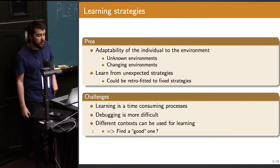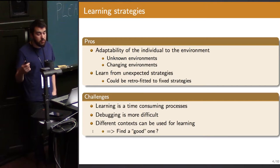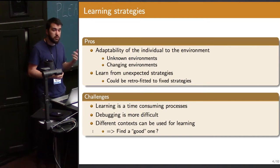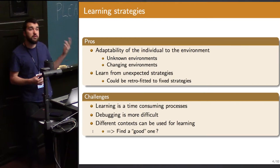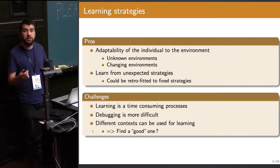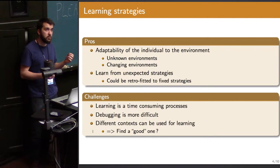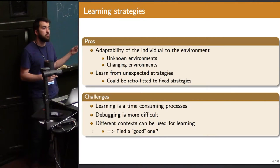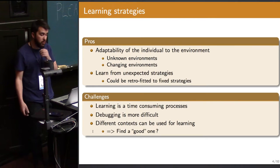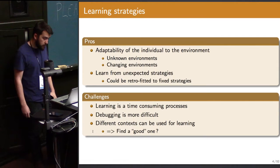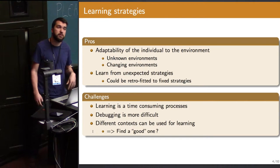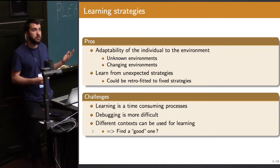What we can propose is to learn the decision-making strategies — to leave agents learn autonomously the strategies they will use to behave in the environment. This takes into account the adaptability of individuals to the environment, whether static or changing, and it allows the experimenter to learn from what the agents are doing. You may see something unexpected, analyze it, and rewrite it as a fixed strategy to compare. Of course there are challenges: the learning process is time-consuming, it generally makes debugging more difficult since agents try things in a somewhat random fashion, and it's hard to know if the learning is working correctly or if there is a bug. Different algorithms can be used for learning, and we are going to see if we can find one that is good enough for archaeology.